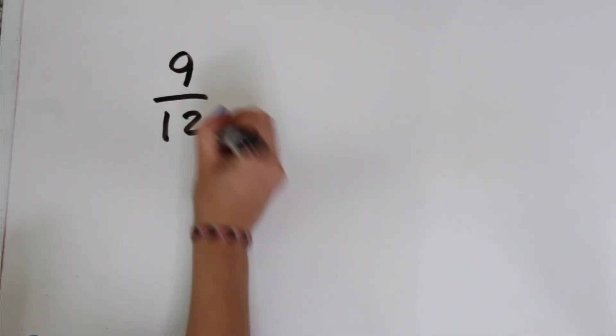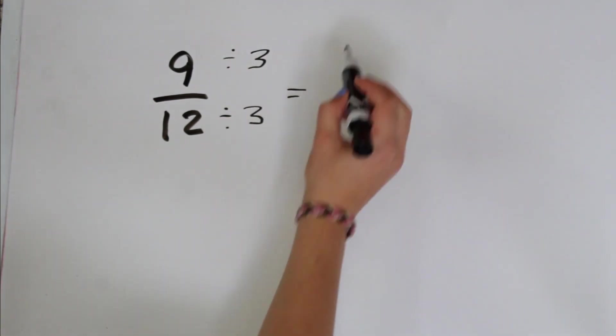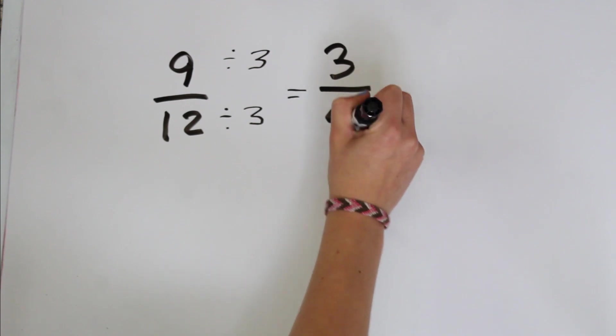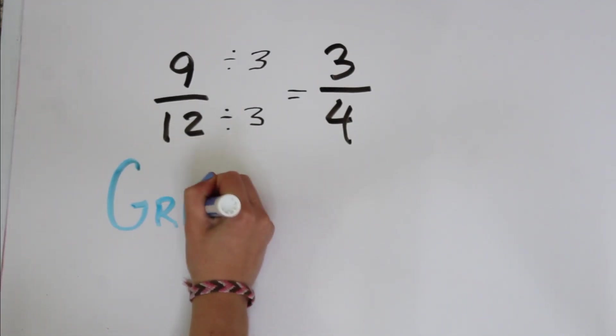But first there are a few things we have to look at. So if I gave you the fraction 9/12, you'd probably see that it can be reduced by dividing both the numerator and denominator by 3. This gives us 3/4.